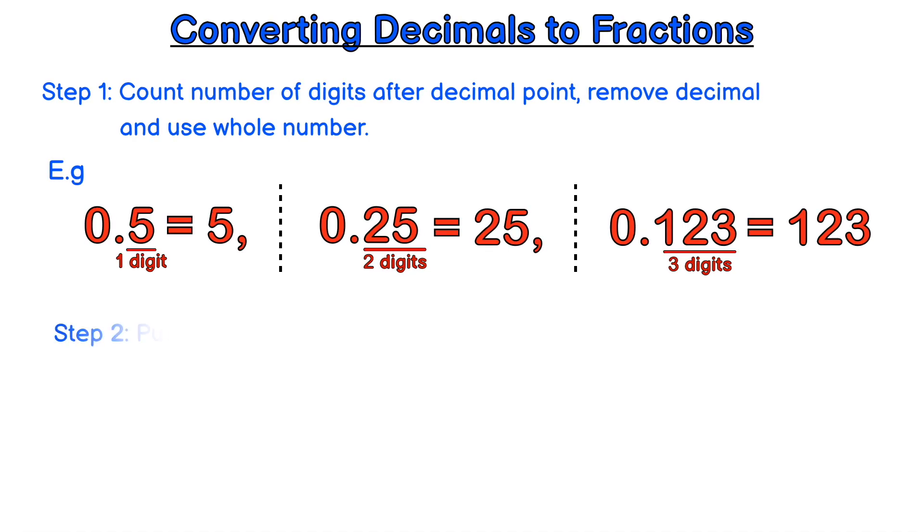Then step two, we put the whole number over 10 if we have one digit, 100 if we have two digits and 1000 if we have three digits and so on.